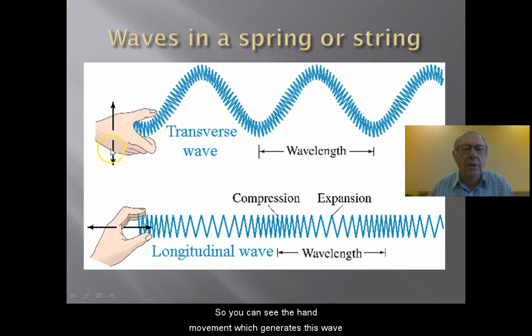So here you can see the hand movement which generates this wave. Then the particles which make up the wave are moving like this. Whereas the direction that the wave is traveling is going to be in this direction along what we call the axis of the wave. So that's another way in which we can classify waves. So transverse or longitudinal.